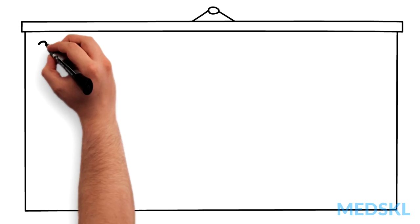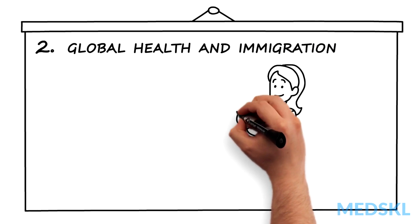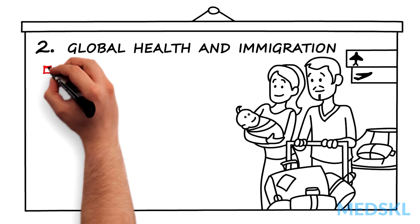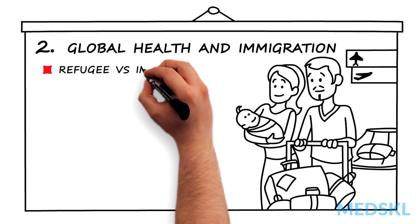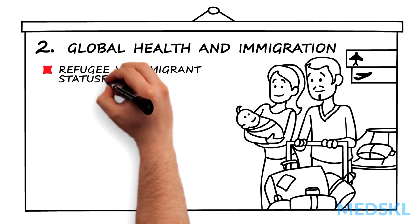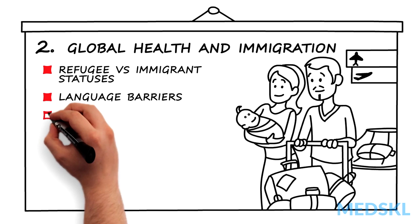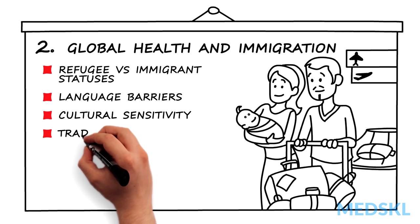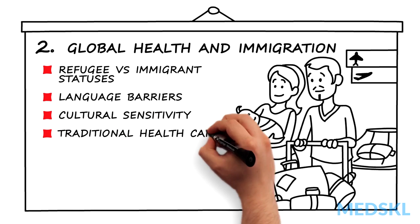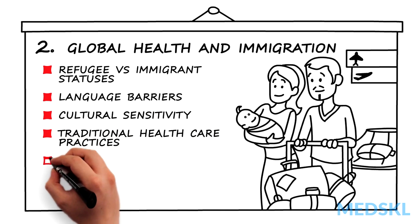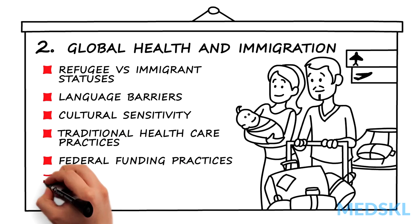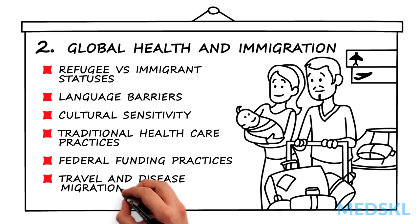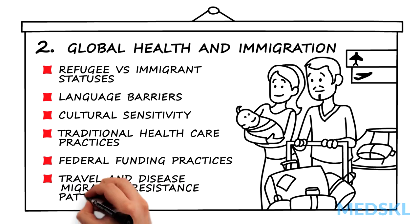In global health and immigration, we must be aware of refugee versus immigrant status, language barriers, cultural sensitivity, traditional health care practices, federal funding practices, travel and disease migration, and resistance patterns.